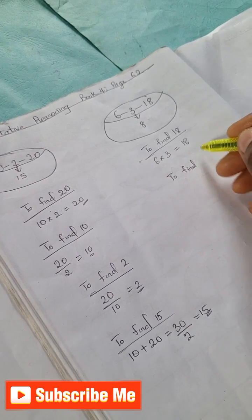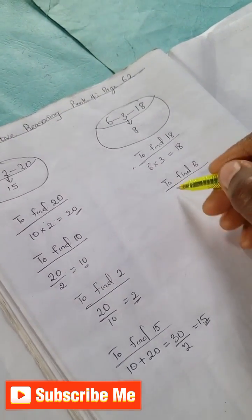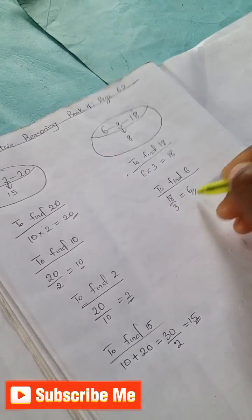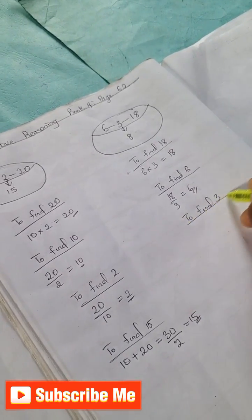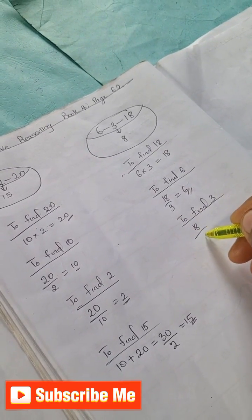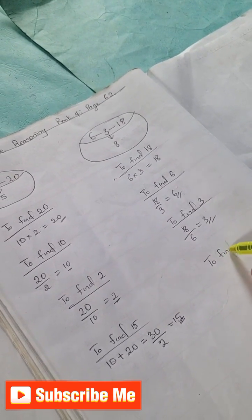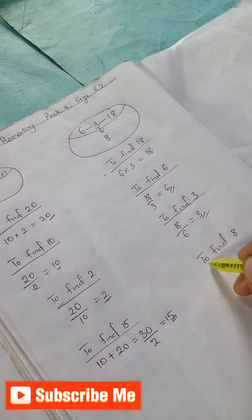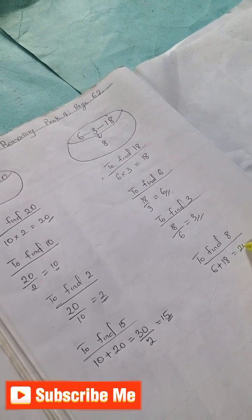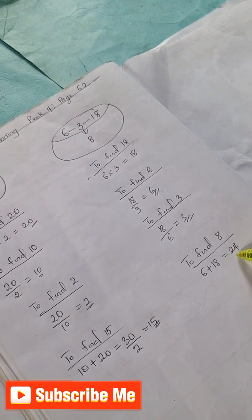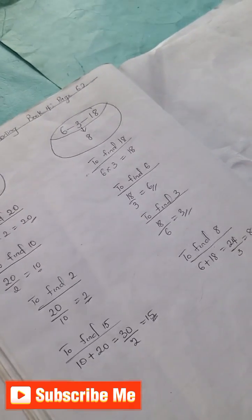To find 6, we have 18 divided by 3 is 6. And to find 3, we have 18 divided by 6 is 3. To find 8, we have 6 plus 18 is 24, right? And 24 divided by 3 is 8, right?